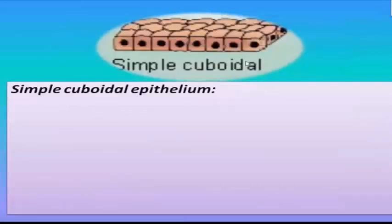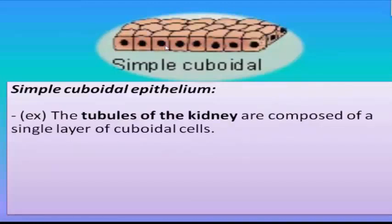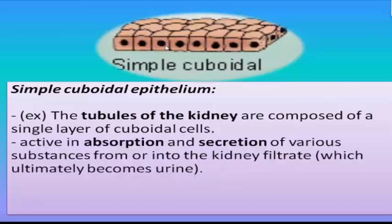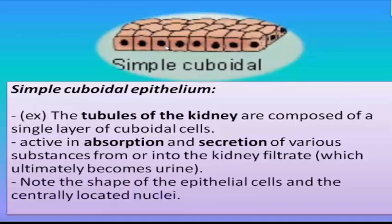The second type is simple cuboidal epithelium — one layer, cuboidal, cube-shaped. An example is the tubules of the kidney, which are composed of a single layer of cuboidal cells. These are active in absorption and secretion of various substances from or into the kidney filtrate, which will ultimately become urine. Note the shape of the epithelial cells and the centrally located nuclei.